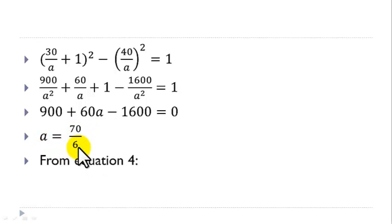Now, from equation 4, we have sinh 6 over 70 b. That is sinh b over a. That is substituting for a. We have sinh 6 over 70 b equal to 24 over 7.